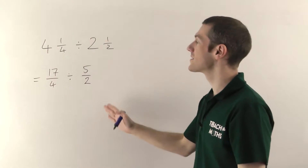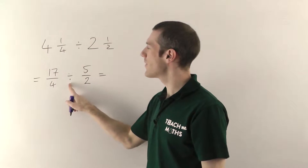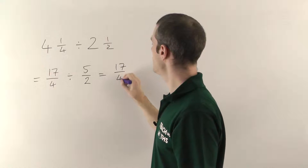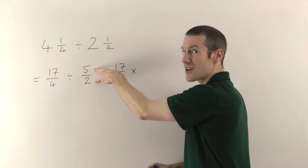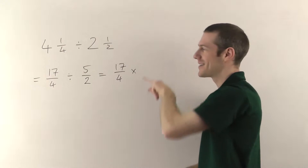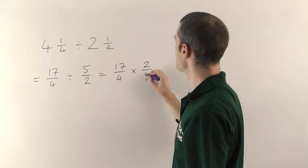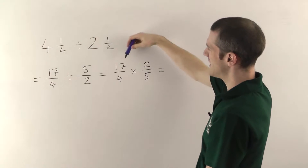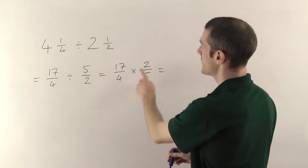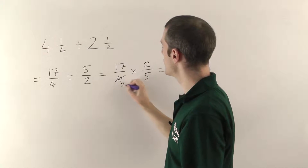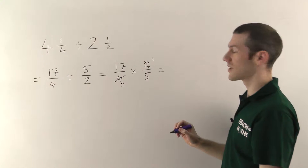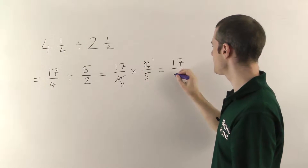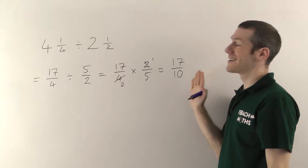Now we can do the question — we can do the maths because they're not mixed numbers anymore. The way you divide fractions is you just turn it into a multiplication. So leave the first fraction alone: 17 over 4. Change the divide into a times. Take the second fraction — it must be the second fraction — and turn it upside down. So 5 over 2 becomes 2 over 5. Now we multiply in the normal way. See if anything cancels. Well 17 is prime, so nothing is going to cancel with that. But the 2 and the 4 will cancel: 2s into 4 go twice, 2s into 2 go once. So 17 times 1 on the top and 2 times 5 on the bottom. So the final answer here is 17 tenths.